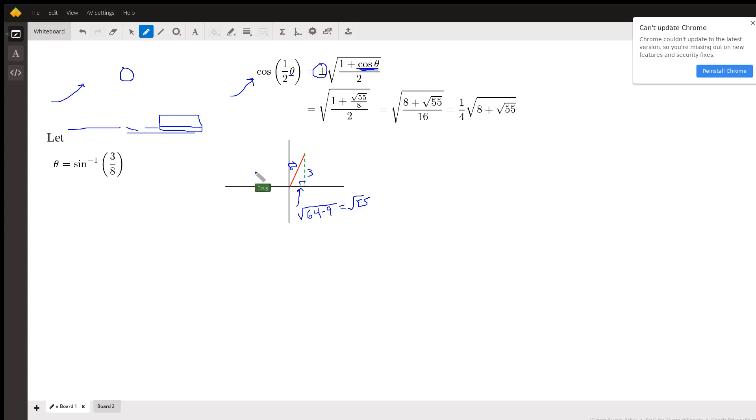The angle that has a sine of three-eighths is going to be in the first quadrant. Opposite over hypotenuse. So to find the length of the adjacent leg, we'll use the Pythagorean theorem: hypotenuse squared minus one of the legs squared, take the square root. So the square root of 55, that's what I have to substitute.